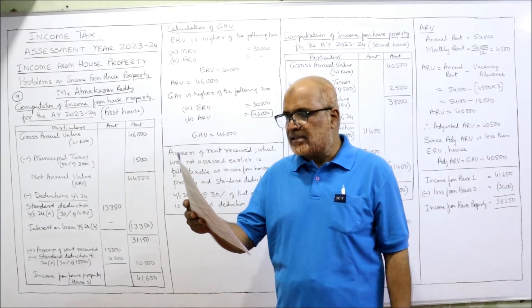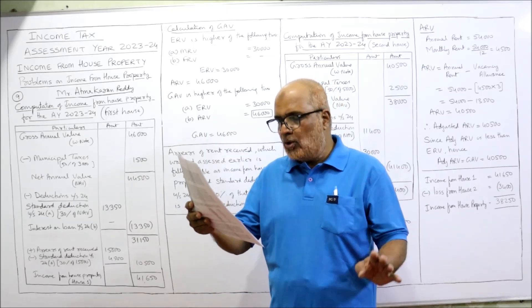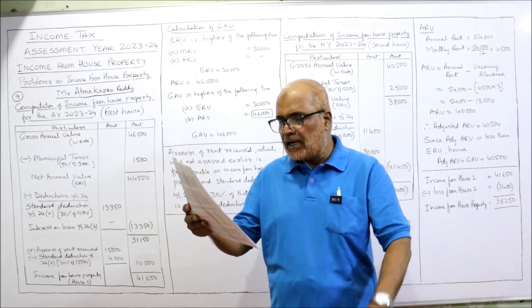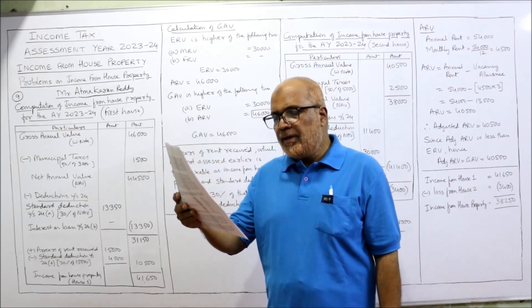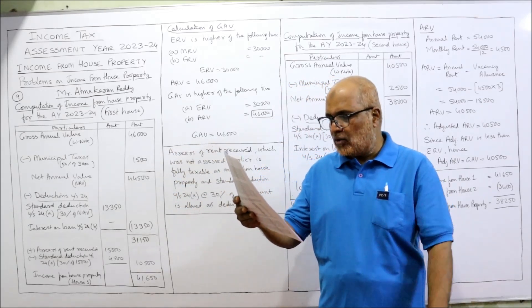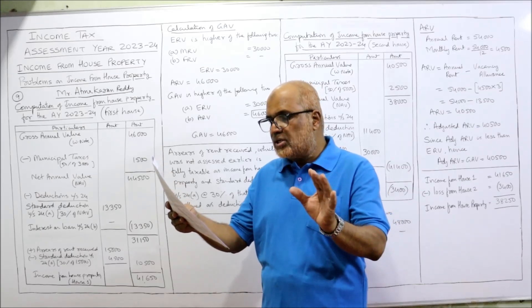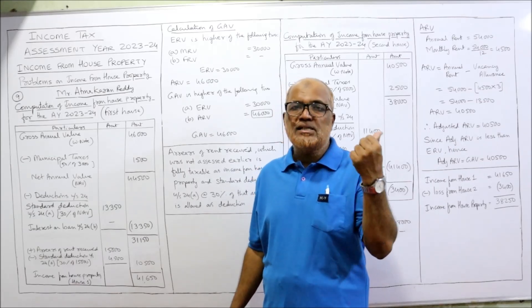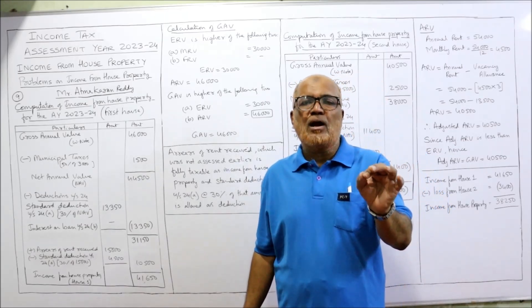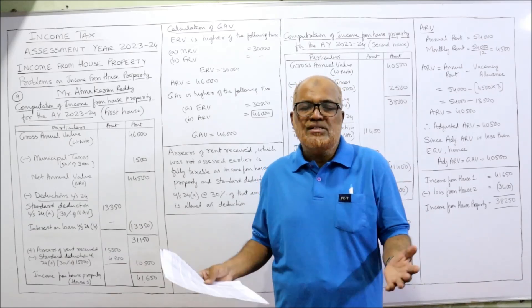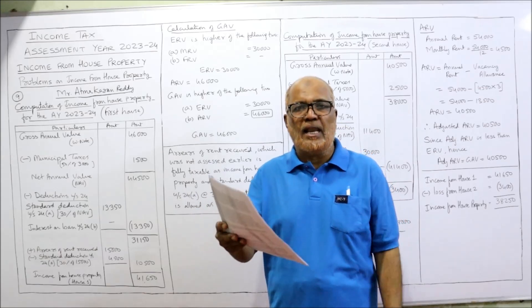He claims the following deductions: for the first house, municipal taxes of 3,000 — but only 50% (i.e., 1,500) will be allowed. Repairs are ignored, not allowed. Brokerage paid to get the tenant is not allowed. For the second house, municipal taxes of 5,000 — only 50% allowed. Repairs ignored. Rent deed registration charges and annual charges are not allowed. Interest on loan taken to purchase the second house is 30,000, but only 10,000 has been paid so far. Under Section 24b, the total interest is allowed as deduction whether paid or not, so the full 30,000 will be allowed.